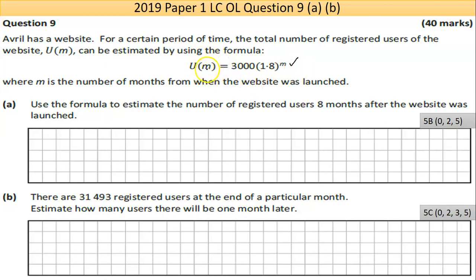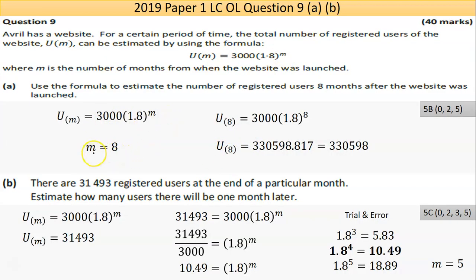In function notation, I often write it as a big U then a small M - just to get across the concept that they're not connected. The small M just tells you what value or input you're using at any one time. U(M) is the concept - it just means number of users, and M is the time in months. So our formula has M = 8; put 8 in instead of M. I put it into the calculator and got this number, which I rounded up to the nearest whole number because you can't have half a person. I probably should have written 'users' at the end.